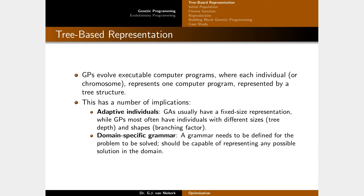This has two main implications. First, we have adaptive individuals. GAs usually have a fixed-size representation — for example, a 10-dimensional problem might use an array of 10 floats, or a bitstream with 30 fixed bits using 3 bits per dimension. With genetic programming, you have a tree that might start very small and then grow in size over time, or even shrink.